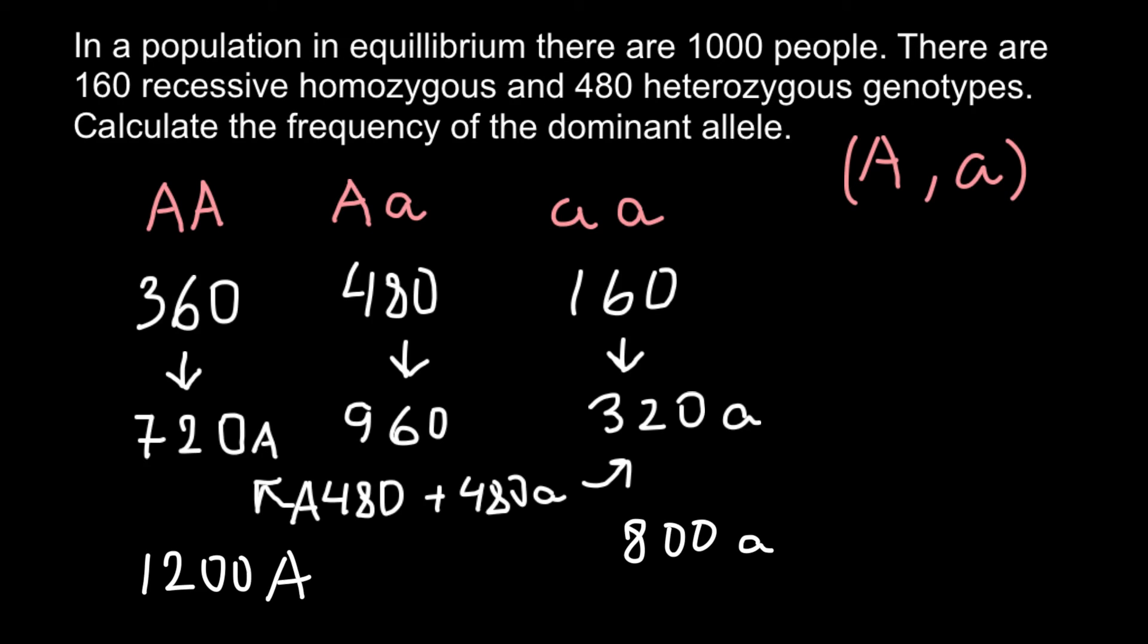Now we have to find the frequency of the dominant allele. One step left. The total number of alleles would be 1200 plus 800, or we can add these numbers. So the total number of alleles that 1000 people have would be 2000.